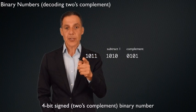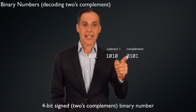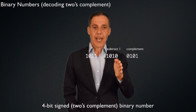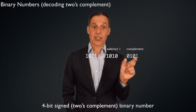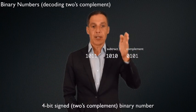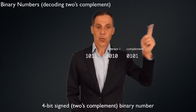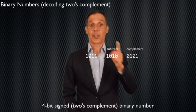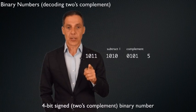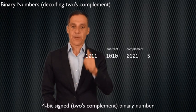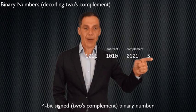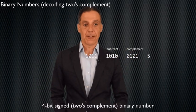When you undo the two's complement you should get a positive number — if that sign bit isn't zero, go back and check your arithmetic. Now I have the positive number 0101, which I decode as 1×2^0 + 1×2^2 = 1 + 4 = 5. So the original value encoded as a four-bit two's complement binary number 1011 is negative five.